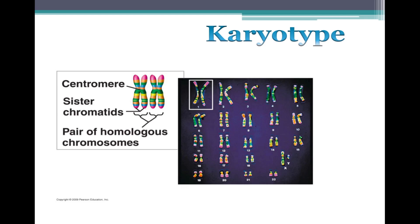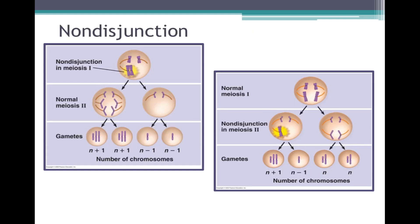Karyotyping is an ordered display of magnified images of an individual's chromosomes arranged in pairs, starting with the longest. A karyotype shows the chromosomes condensed and doubled as they appear in metaphase of mitosis. We use karyotypes to detect chromosomal abnormalities that may lead to serious conditions. Nondisjunction is when the members of a chromosome pair fail to separate. A nondisjunction may occur in meiosis I or meiosis II, both leading to abnormalities in chromosomal numbers of the gametes made.